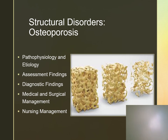Osteoporosis is a loss of bone density. Women have it more than men, and this is where the bone becomes more brittle and porous. It is more common in small-framed, slim, Caucasian, and Asian women, especially women who are menopausal. We see it more in clients that have a family history, increased age, a low calcium intake, prolonged steroid use, Cushing's syndrome, etc., which are all risk factors.